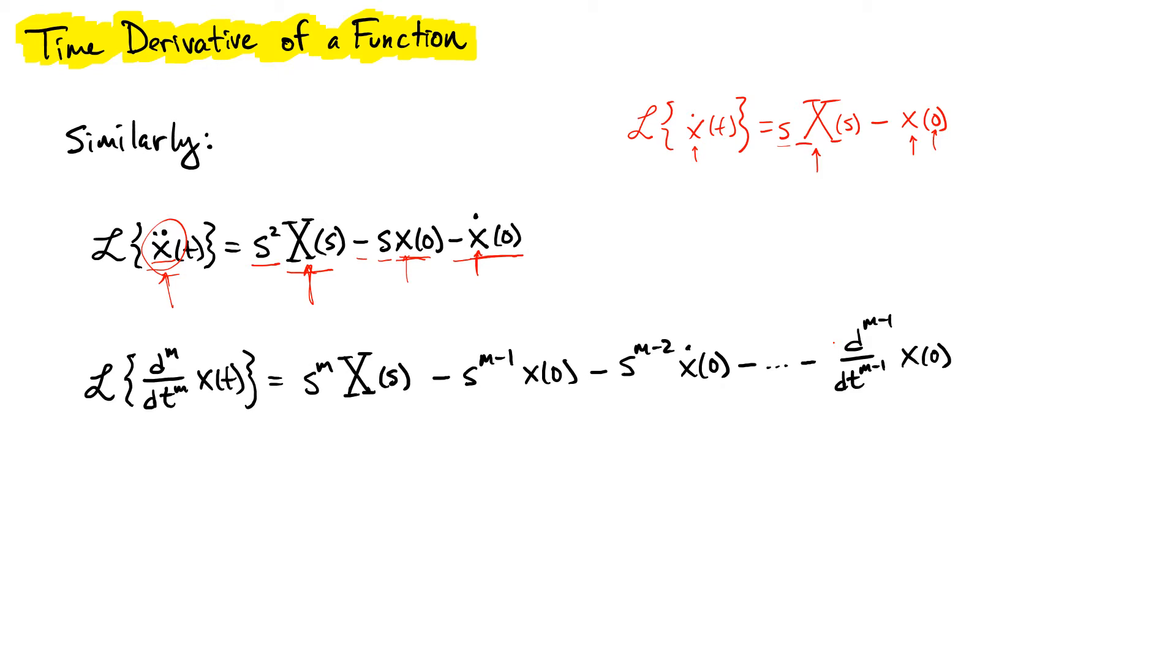As you keep getting higher and higher order derivatives, if you have m derivatives, this is just generically showing you what it looks like. You have m factors of s pre-multiplying x, the Laplace transform, and then you get these decreasing powers with increasing derivatives on the initial conditions. This is an m minus 1 order derivative.